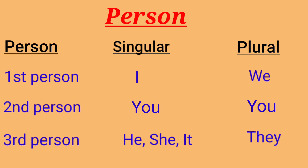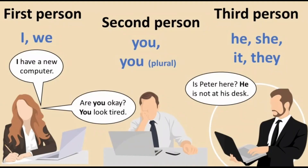Through this table, you can understand the way of learning person very easily. Now let's see some examples. Look at this picture — you can see the example for first person. The lady says, 'I have a new computer.' The lady is the speaker and she is making a statement about herself — that is what we call first person.